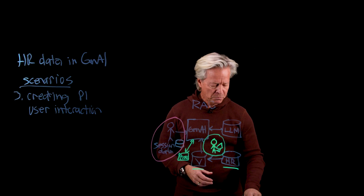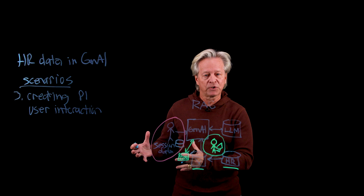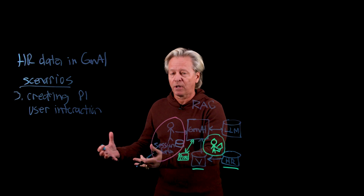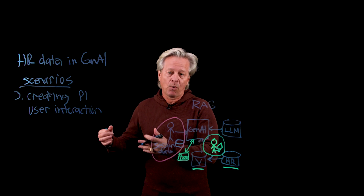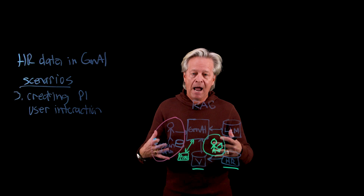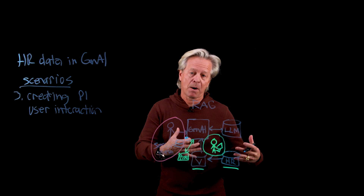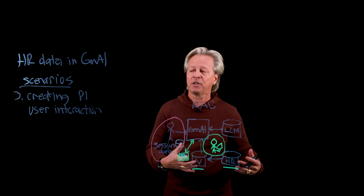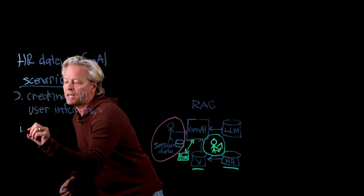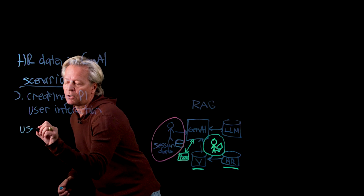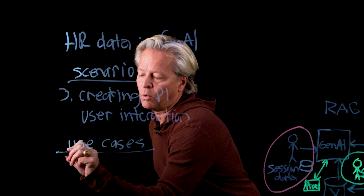As we've done in the past, we're going to look at a set of use cases. These are real-life models or examples that we can use to explain how we want to interact with the system, and then we'll come up with some strategies on how to protect that. We have two use cases to look at today.